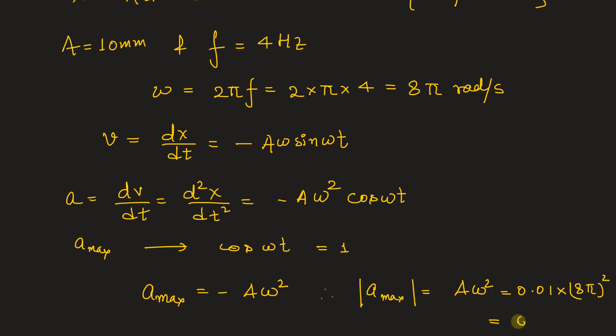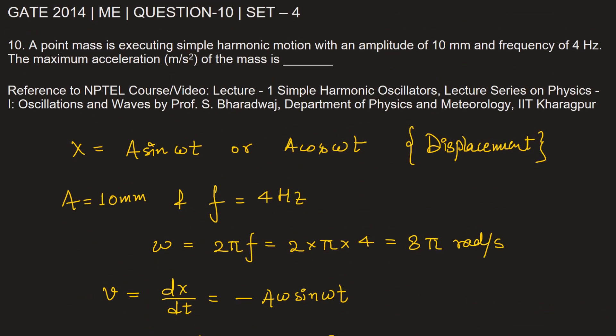This will be equal to 6.31 meter per second square. So let's fill in the blank: this value is 6.31 meter per second square.